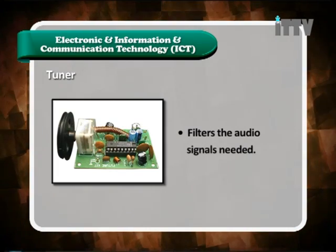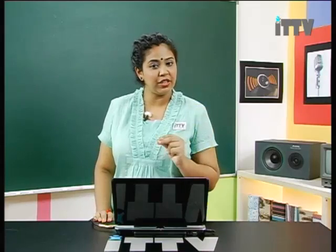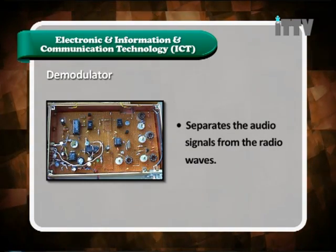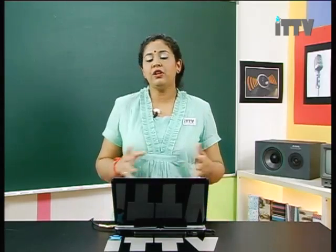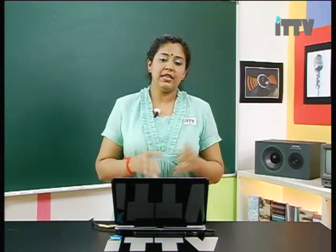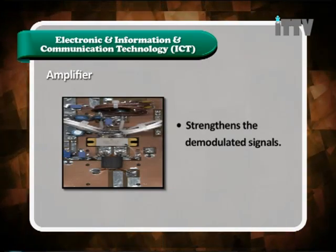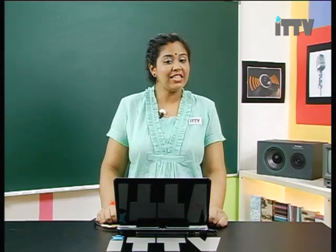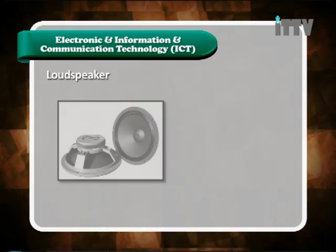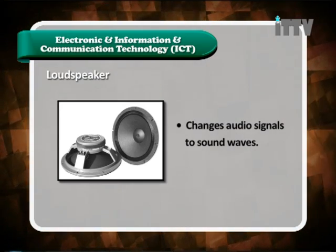The demodulator separates the audio signal from the radio waves. It splits the received signal into two parts: the audio wave and the carrier wave. The amplifier then strengthens the demodulated audio signal. Finally, the loudspeaker changes the audio signal into sound waves, converting the electrical signal back into the sound we can hear.